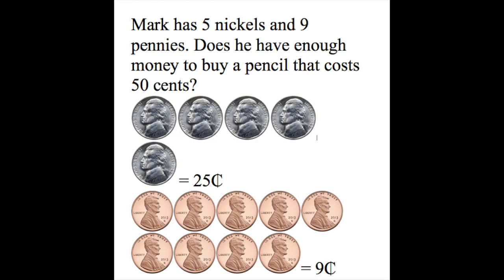Step 2 is to show our 9 pennies. Draw 9 circles with 1 on the inside and count those together, because we know a penny is worth 1 cent. So you should have 5 circles with 5 in the middle for the nickels equaling 25 cents, and then for step 2, draw 9 circles with 1 inside and count: 1, 2, 3, 4, 5, 6, 7, 8, 9 cents. That is step 2.